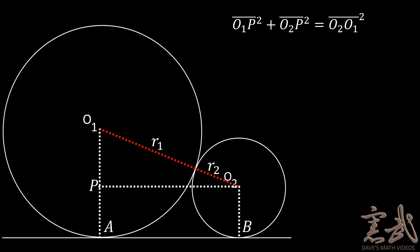So to use the Pythagorean theorem, we will write that O1p squared plus the length of the segment O2p squared is equal to the hypotenuse. And the hypotenuse is the length of the segment O2, O1.